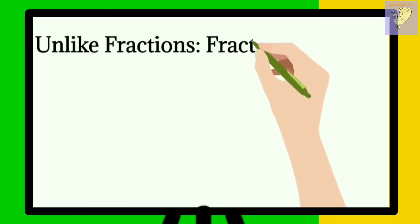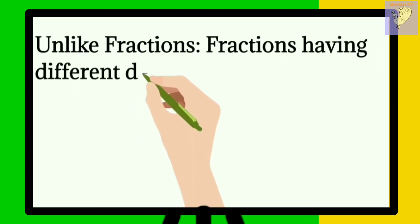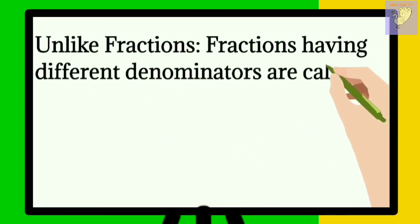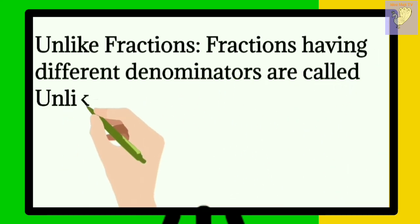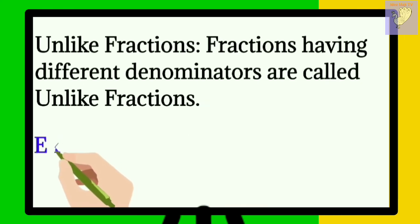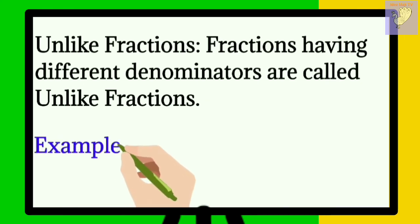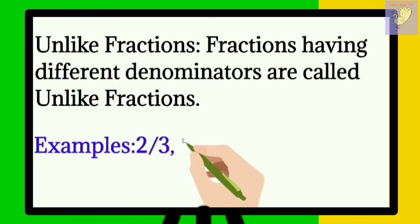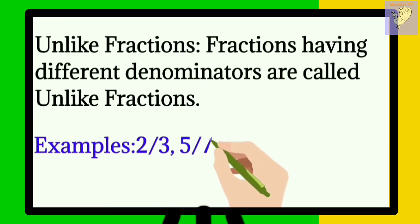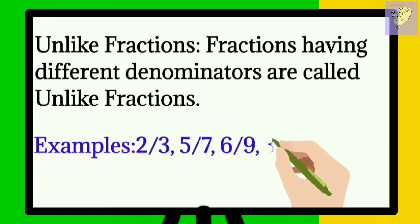Unlike fractions are fractions where the denominators are different. For example: 2 upon 3, 5 upon 7, 6 upon 9, and 3 upon 5 are unlike fractions, as you can see the denominators are different.